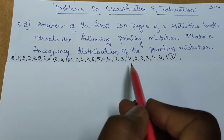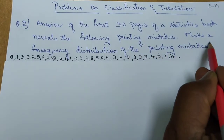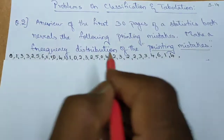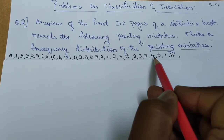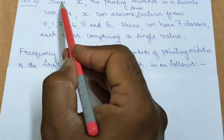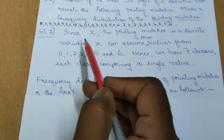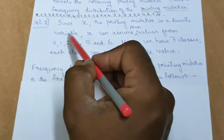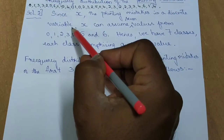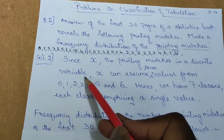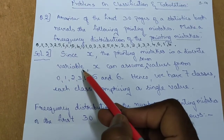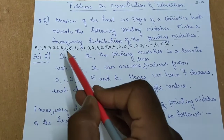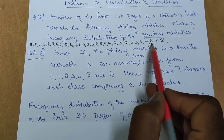Now we consider x as the unknown variable, which is nothing but the printing mistakes. X varies from 0 to 6. Therefore x represents the printing mistakes as a discrete series variable. In the previous problem x was an individual variable; this is a discrete variable because the mistakes could be 0, 1, 2, 3, and can go up to 6.